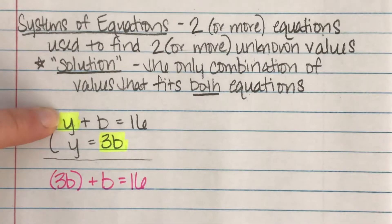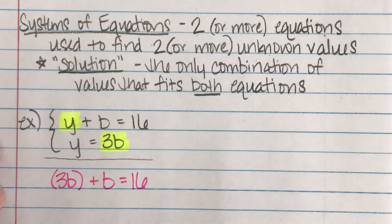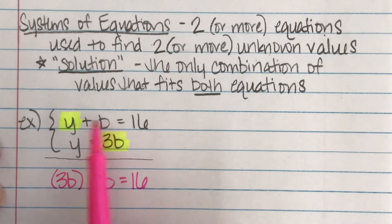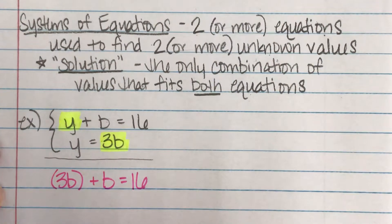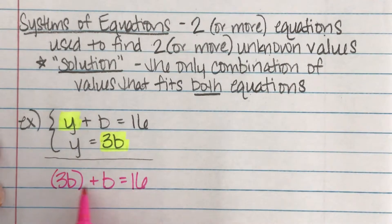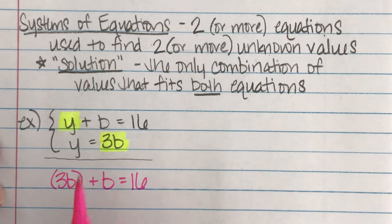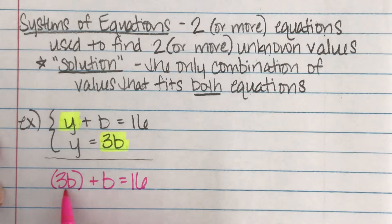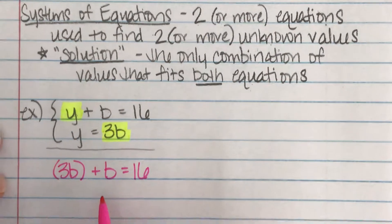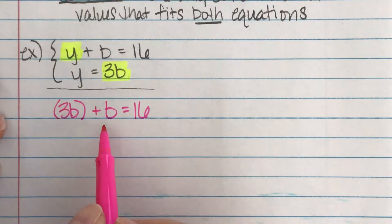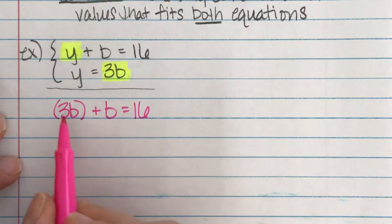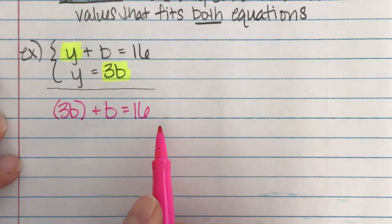Here's why this is useful to be able to do this is now all of a sudden, instead of having two different letters in an equation, which is problematic, I can't solve and know an answer if there's two things I don't know. Now I'm down to only not knowing one thing. I don't know what blue is, but at least I'm not thinking about blue and yellow. All I'm thinking about now is blue in this problem.